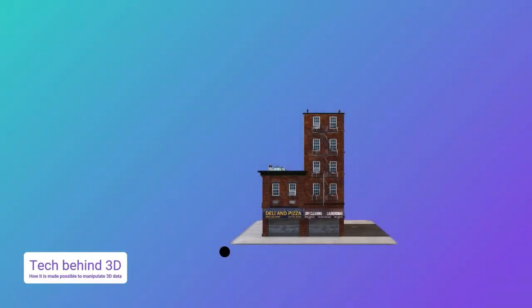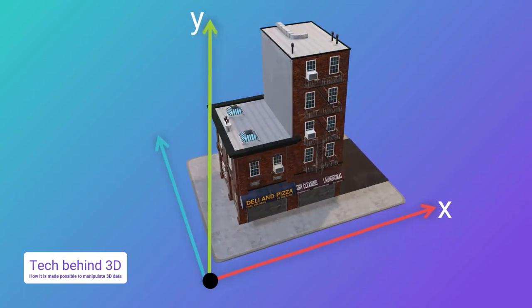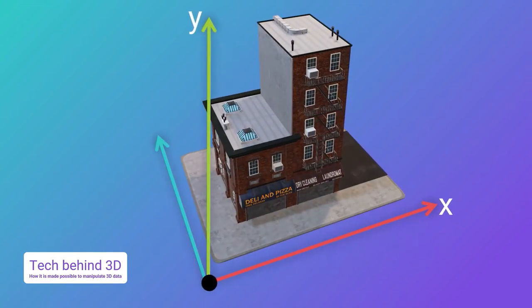See that building from earlier? A simple picture is two-dimensional — it exists only on X and Y axes. A three-dimensional representation, as the name suggests, has three axes: X, Y, and Z. On a micro level, 3D is made of these simple components.